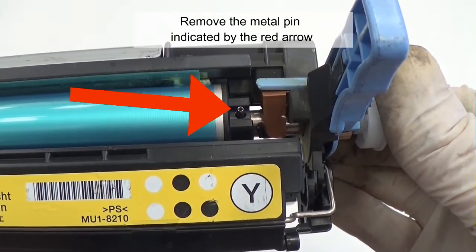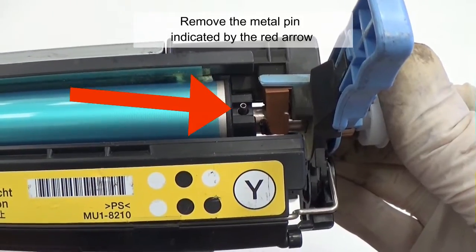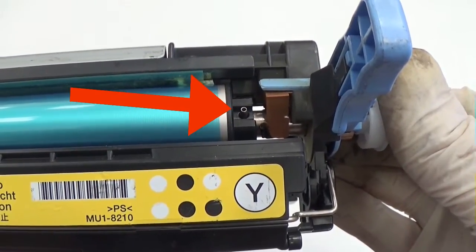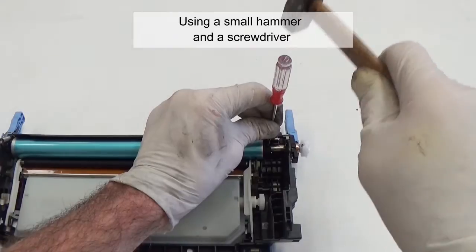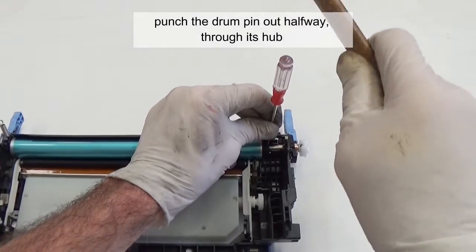Remove the metal pin indicated by the red arrow. Using a small hammer and a screwdriver, punch the drum pin halfway through its hub.